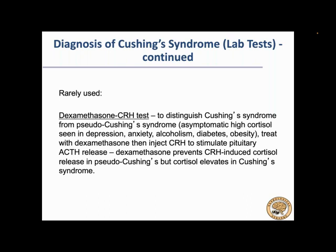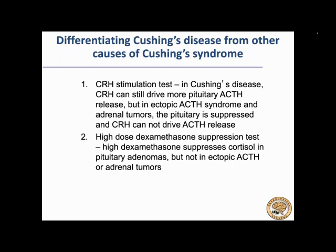Once we've confirmed Cushing's syndrome, how do we know it's coming from the pituitary? The high-dose dexamethasone test — as opposed to the low-dose test — is valuable: a high dose of dexamethasone will suppress cortisol in a patient with a pituitary tumor, but will not suppress ectopic ACTH or adrenal tumors. The CRH stimulation test is also useful: CRH can drive pituitary ACTH production in Cushing's disease but not in ectopic ACTH release, because the pituitary will be suppressed in those patients. Confirmation of a central source can also be based on biochemical evaluation and then radiographically assessing the pituitary gland through MRI and inferior petrosal sinus sampling.